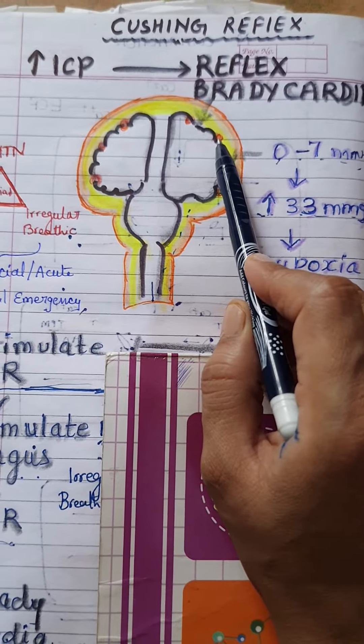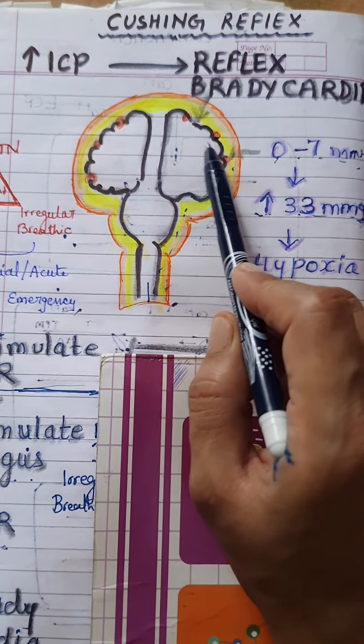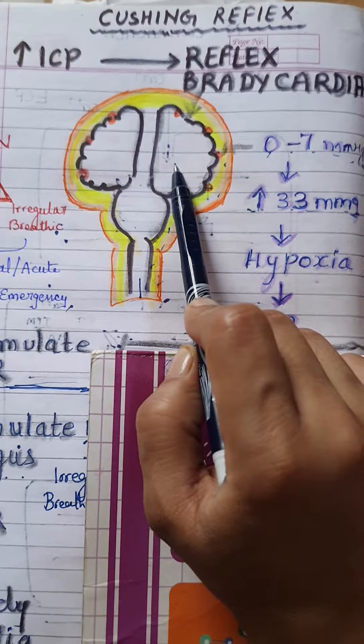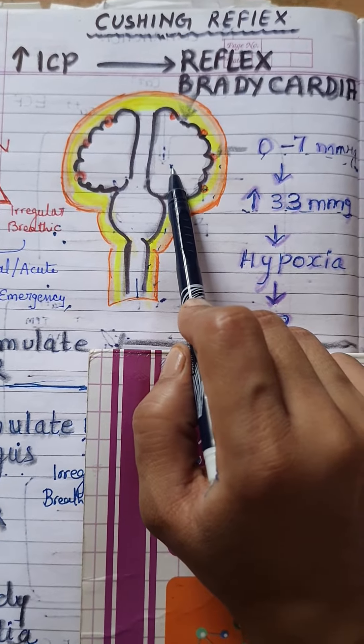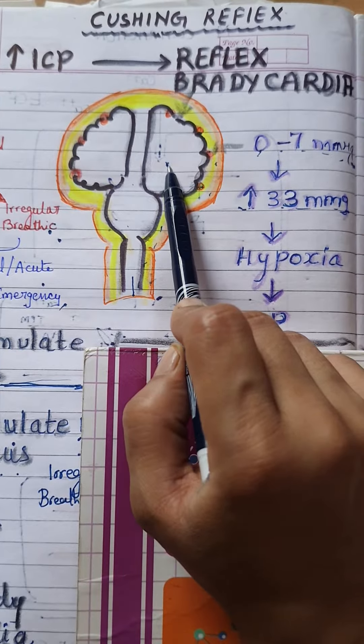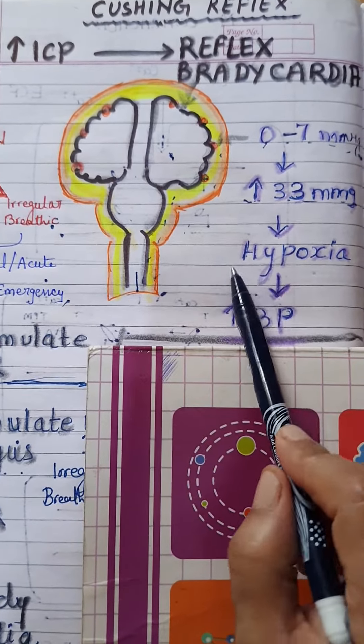And this pressure produces a condition of ischemia to the brain. And ischemia to the brain causes less oxygen supply to the brain tissues which is a stressful condition and known as hypoxia.